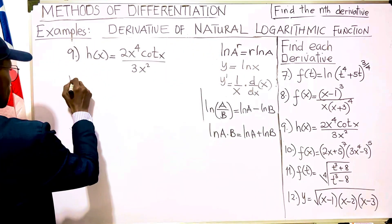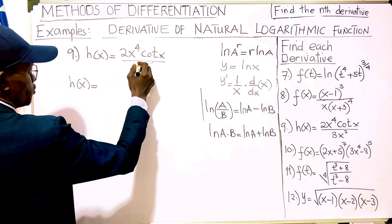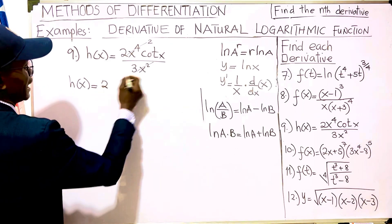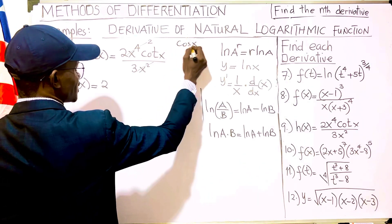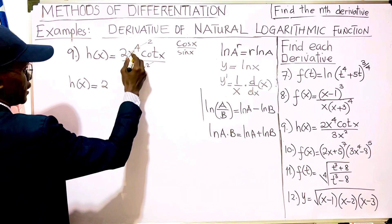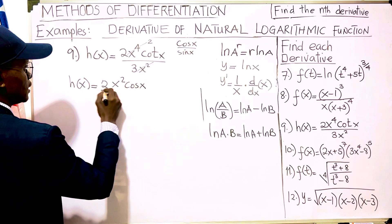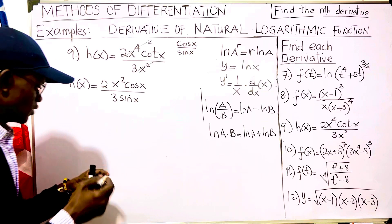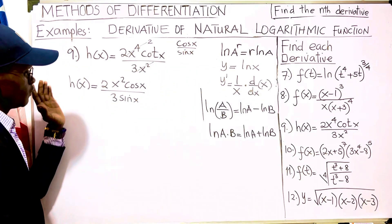We can simplify x squared and x to the fourth power — we cancel two from there, so we have 2. This cot can be rewritten as cos(x) over sin(x), so we have 2x squared times cos(x) divided by 3 sin(x).